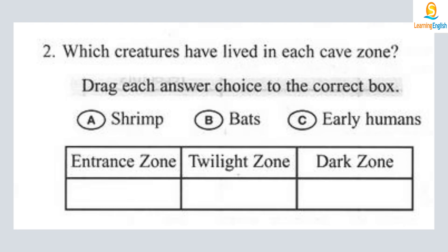The next zone is called the twilight zone. The twilight zone is sheltered from direct sunlight and is home to a large, diverse population of animals, such as salamanders, bats, and during severe winters, bears.